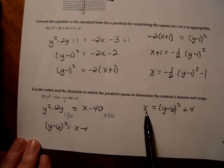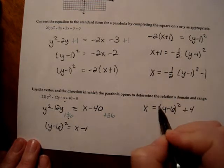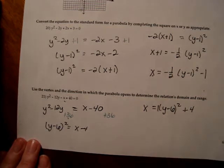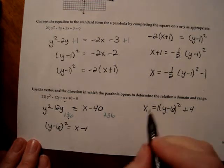So since this is solved for x and a is, there's nothing there so we know it's a 1. I know this parabola opens to the right and its vertex is at 4, 6.